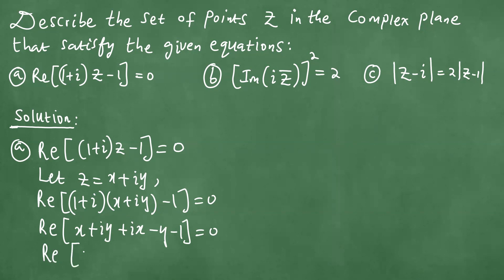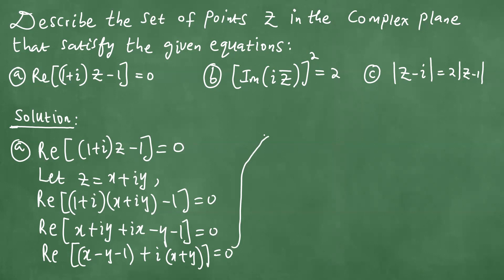We take the real part of this complex number, which gives x minus y minus 1 equals 0. That means y is equal to x minus 1.